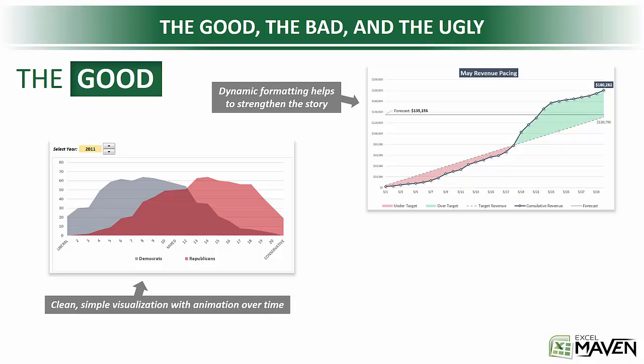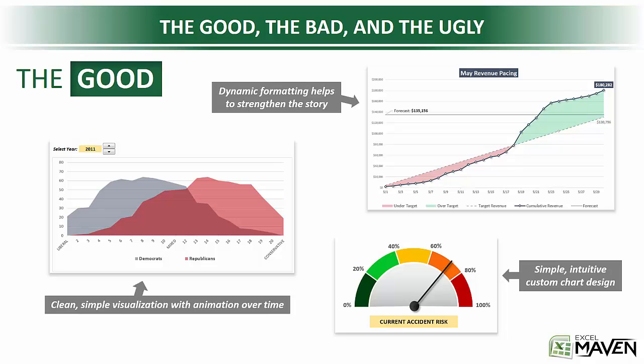Next we have a custom built pacing chart where we're looking at cumulative revenue over time against a goal or a target. Here we're using some really clever dynamic formatting rules to shade the difference different colors based on whether we're underpacing or overpacing that target. And third, a simple, intuitive, custom designed gauge chart. This chart is really only intended to show one thing, which is where a particular value falls along a given range, in this case from 0 to 100%. It's a nice example of how to combine individual chart types in Excel to create something brand new and totally unique.